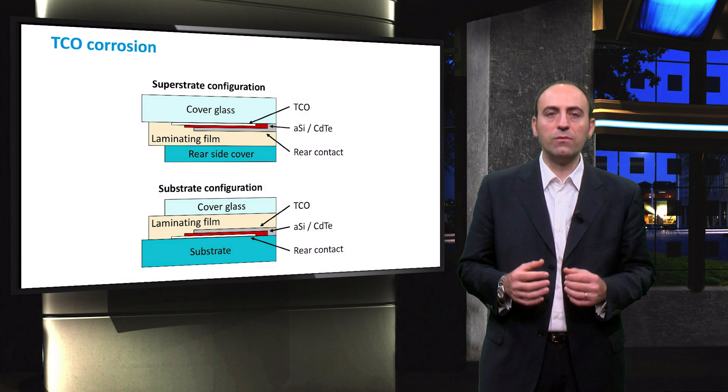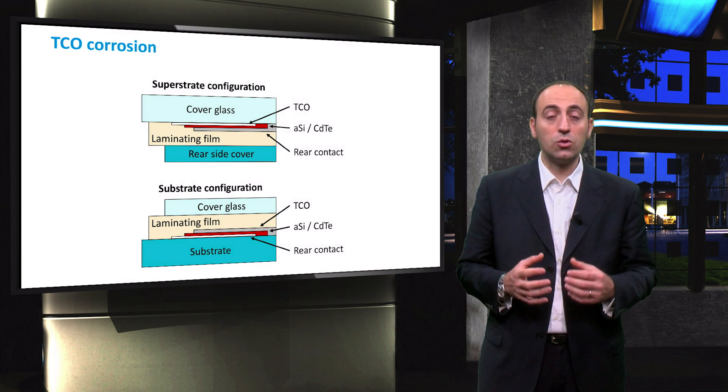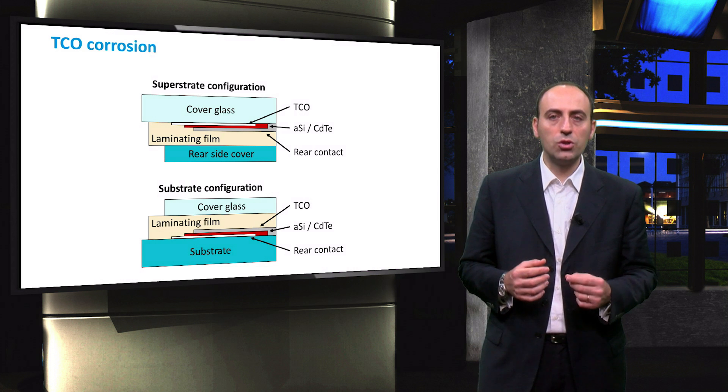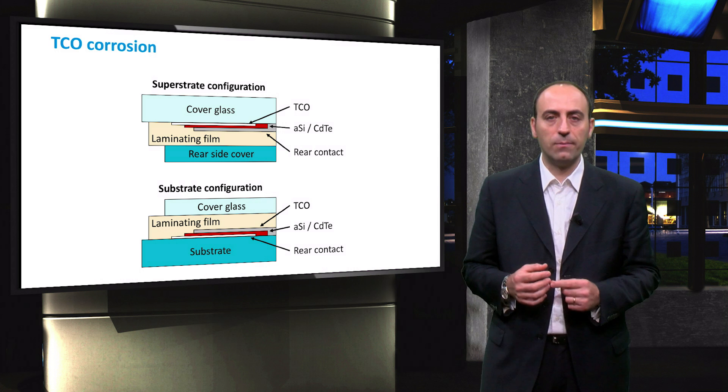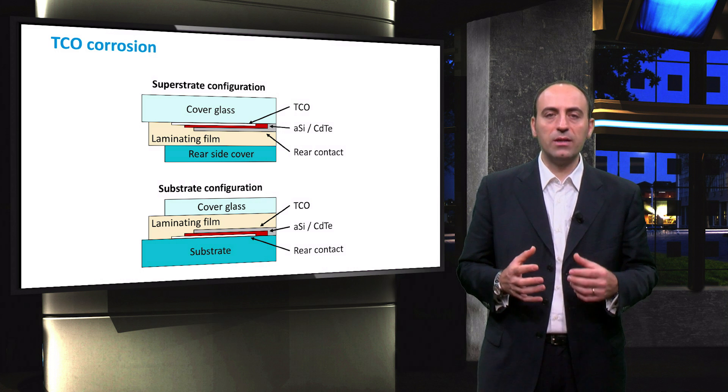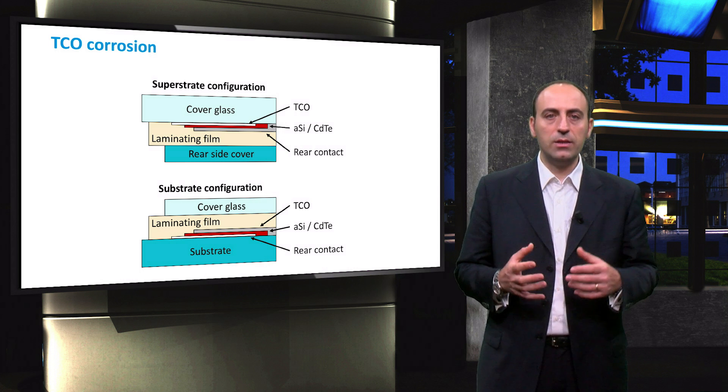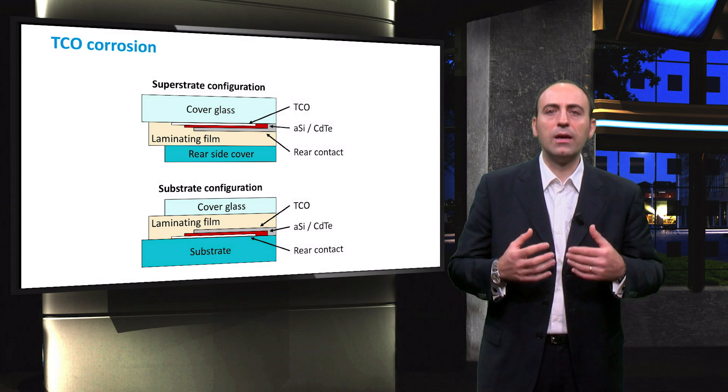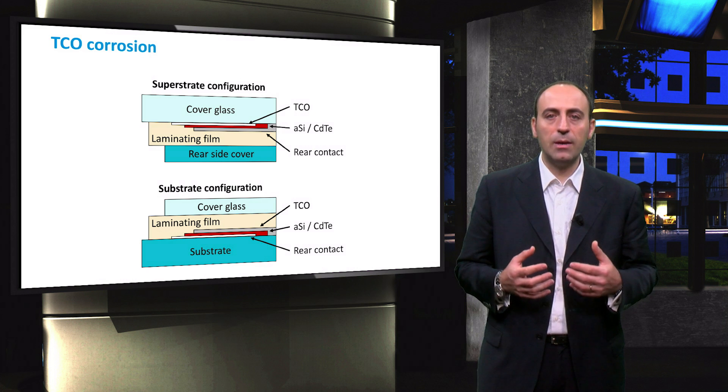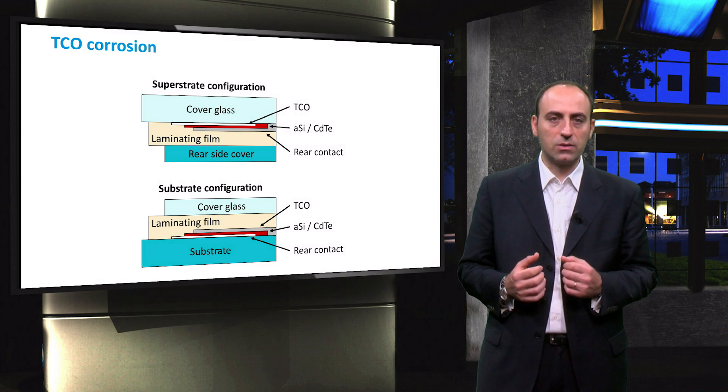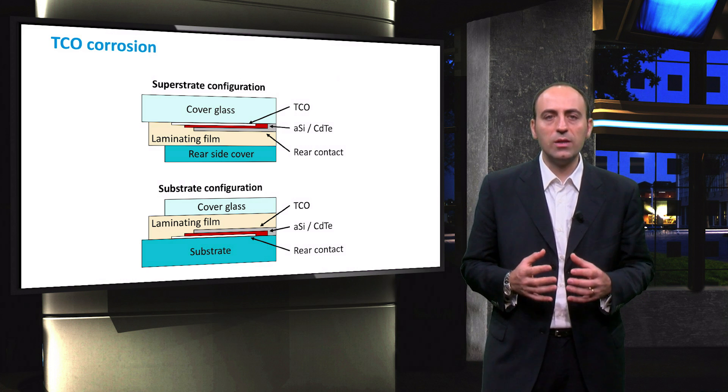Another phenomenon observed in the past, even after short operating times, is the corrosion of the so-called TCO layer. The TCO, or transparent conductive oxide, is a layer present in thin film PV modules. It is used to allow electronic conduction without the application of front and back contacts. Two designs are usually taken into account, the superstrate design and the substrate design.